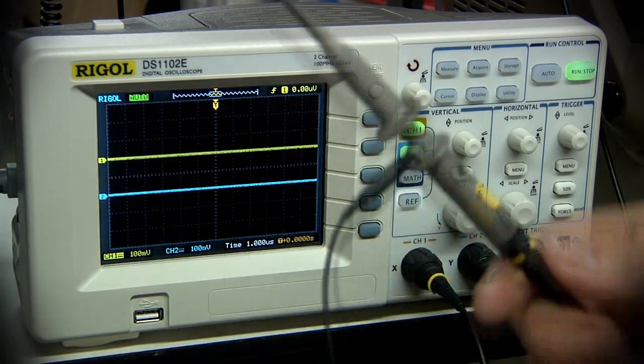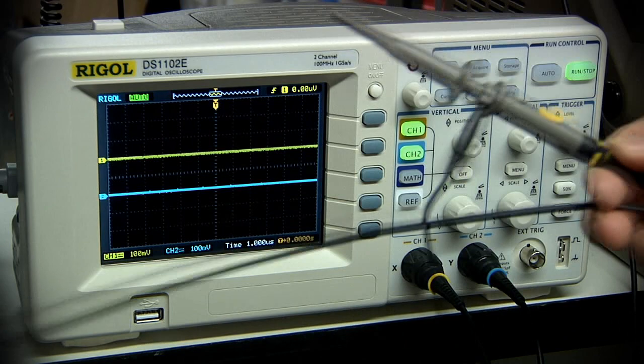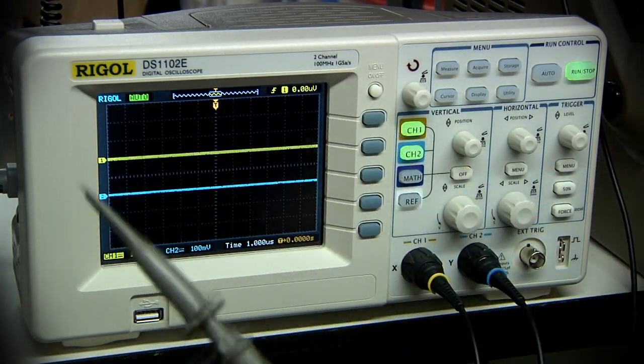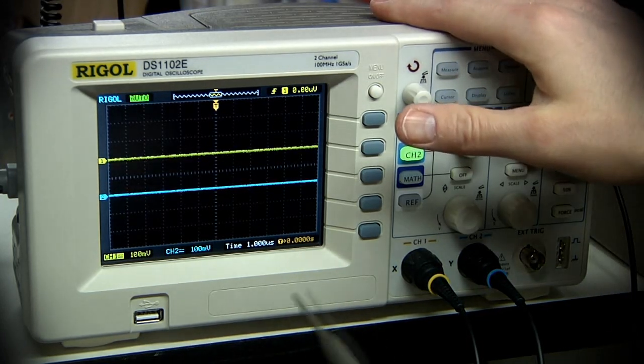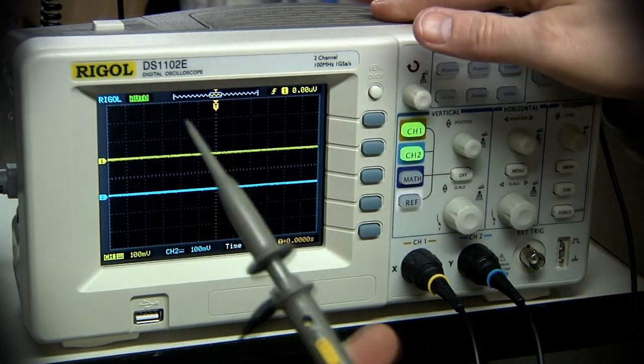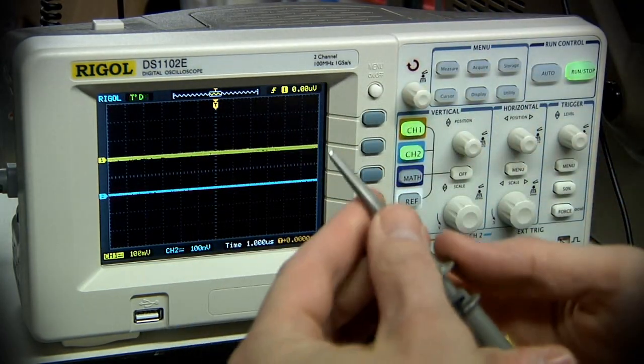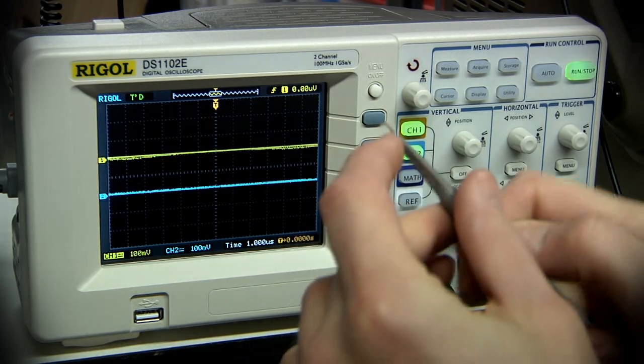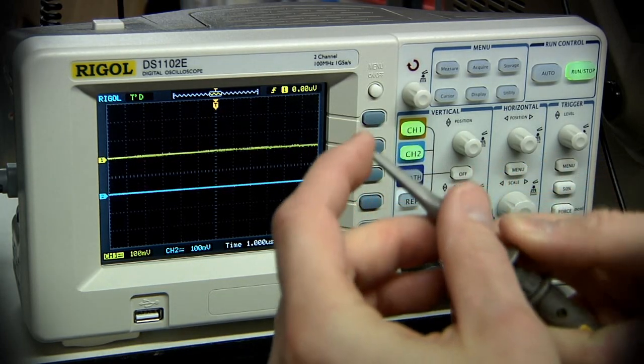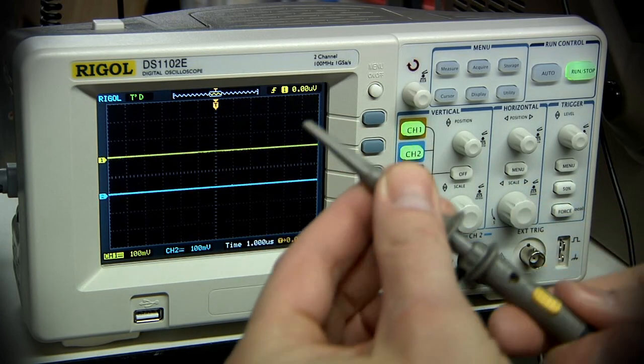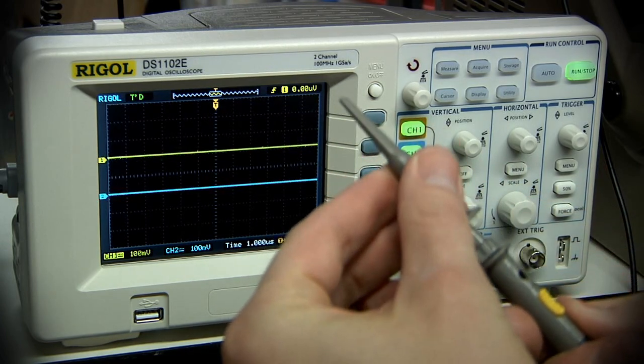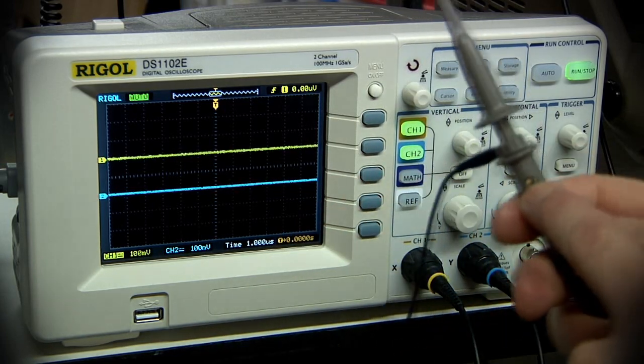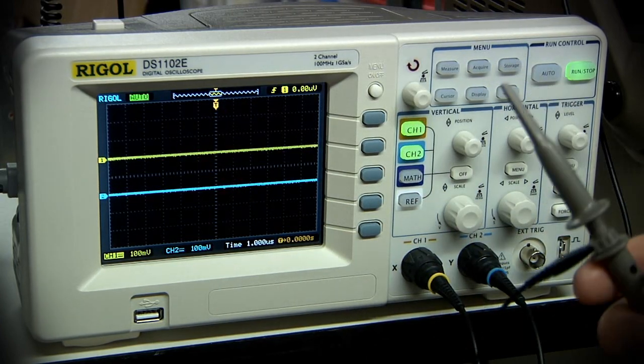So I've unpackaged the probes. They are a little on the flimsy side. But considering you can spend easily as much as this entire scope costs just buying probes, they should do the job. Now what looks like the potentially worst bit about these probes is that these are stamped metal. The hooks, they're not actually wire hooks like better probe leads are. But they have 1x, 10x adjustment.